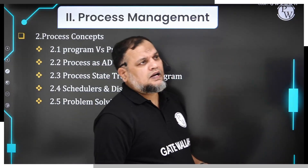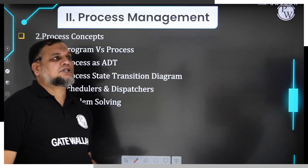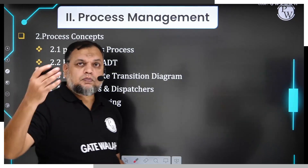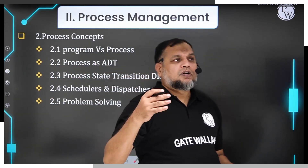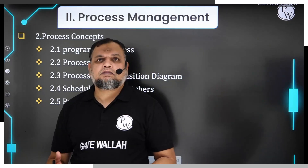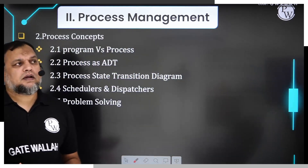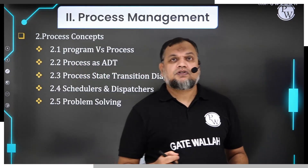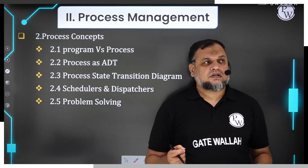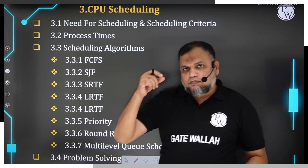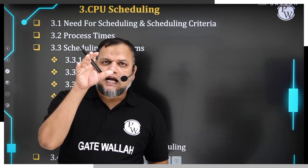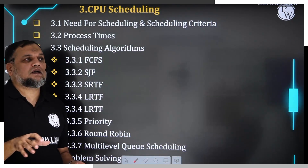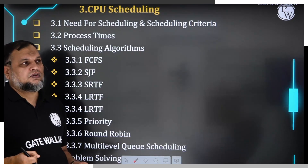Our first module is Process Management, which will have nearly six chapters. The first chapter is Process Concept, where we discuss programs and processes, the process state transition diagram — one of the important concepts here — and then the concept of schedulers and dispatcher. We will have a problem discussion session. My approach is to ensure that as soon as you cover a topic, we immediately look at relevant problems so that your underlying concept gets strengthened.